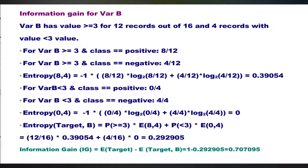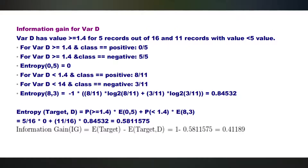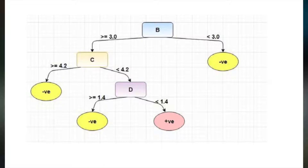Therefore, entropy (0, 4) equals 0, and the weighted entropy of (target, B) equals (12/16) times 0.39 plus (4/16) times 0, which equals 0.29. Information gain equals entropy of target minus entropy of (target, B), which equals 1 minus 0.29, equal to 0.707. Similarly, the information gain is calculated for attributes C and D. From these calculations, a decision tree can be built. According to their values, the attributes should be placed on the tree. An attribute with a better value should be placed as the root node, and a branch with entropy more than 0 needs further splitting. A branch with entropy 0 should be converted to a leaf node.